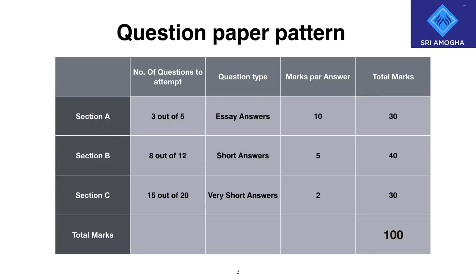Section A: you need to write three out of five essay answers for 10 marks each. Section B: you write eight out of twelve short answer questions for five marks each. Section C: you write 15 out of 20 very short answer questions which carry two marks each. Total is 100 marks.